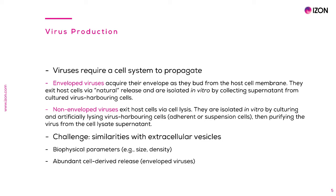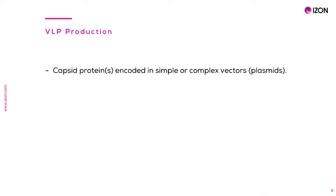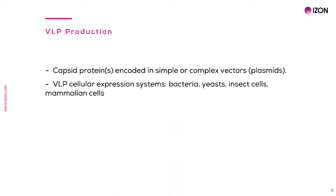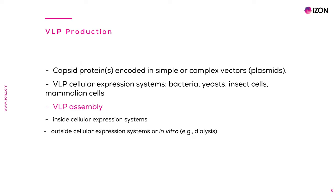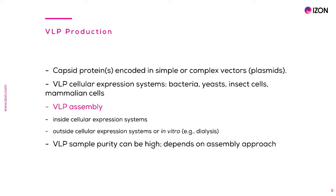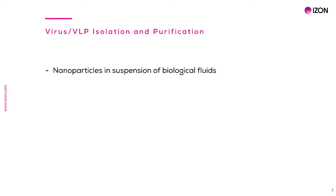As cell-released viruses may have significant similarities to other cell-released particles, such as extracellular vesicles, isolation protocols must be considered carefully. For VLP production, capsid proteins are normally encoded in plasmids, which are incorporated into a cellular expression system using bacteria, yeast, insect cells or mammalian cells. Once protein subunits have been produced, VLP assembly can occur inside the cellular expression system or outside of it — when assembly occurs outside the cell, this is referred to as in vitro assembly. In vitro VLP assembly may involve a form of dialysis in an assembly buffer and has the advantage of being mostly free from other cell-derived contaminants. After this process, viruses and VLPs are essentially nanoparticles in suspension, so their isolation methods are like those of other biological nanoparticles, such as extracellular vesicles.